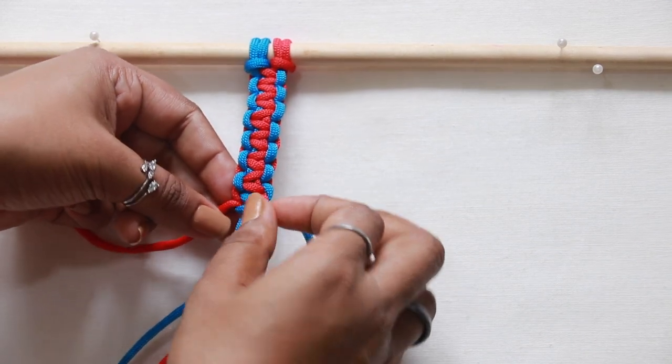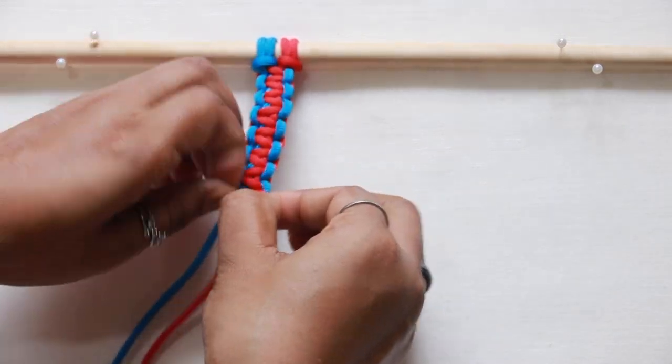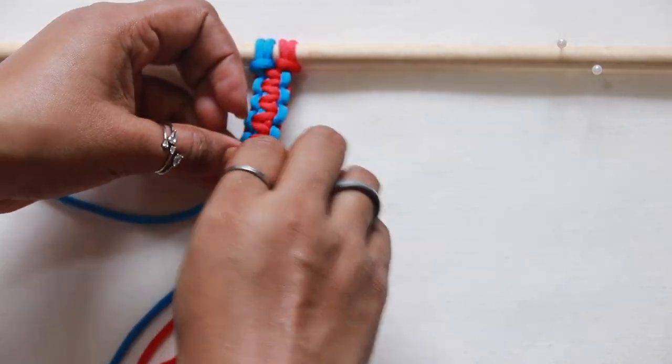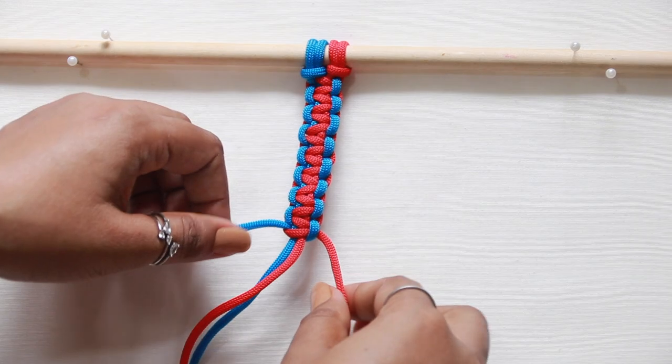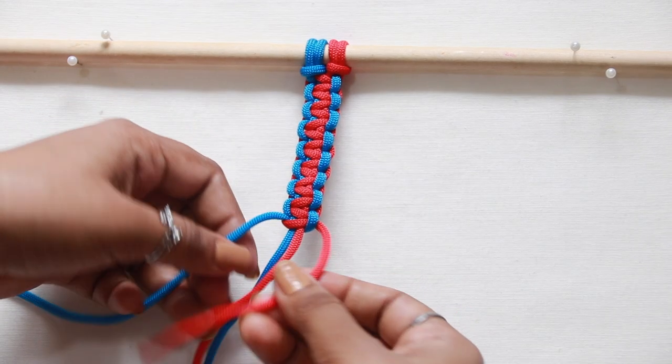Once you see or realize your mistake, open it up and rectify. For example, in this case, the previous blue strand on top is on the right side.